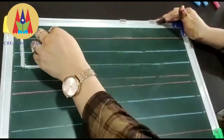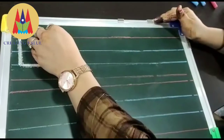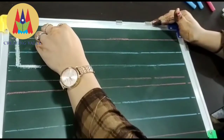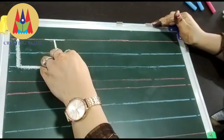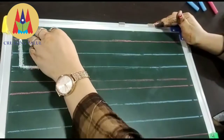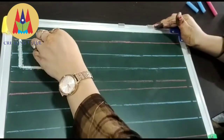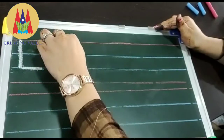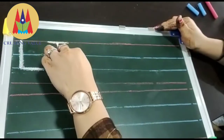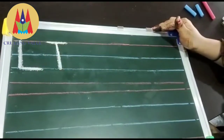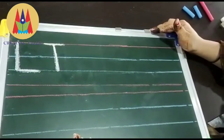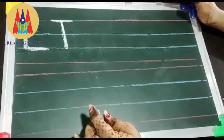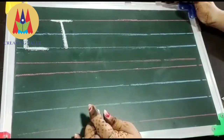Our next alphabet is T. T for tiger. Standing line and sleeping line — in red sleeping line and red to blue standing line. T for tiger, T for teapot and T for train.